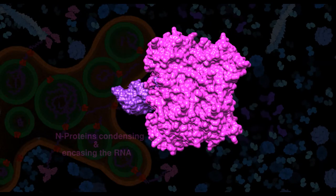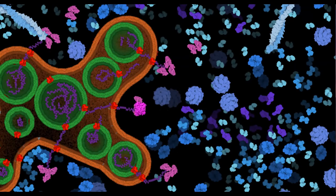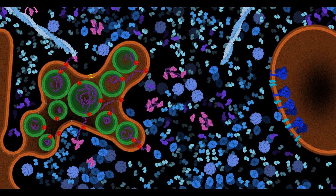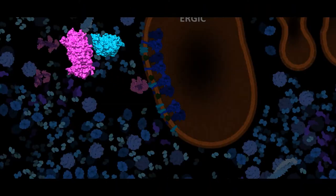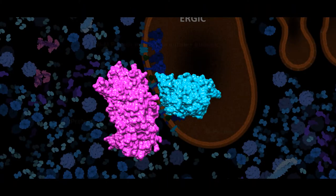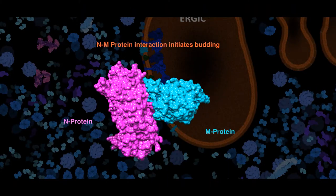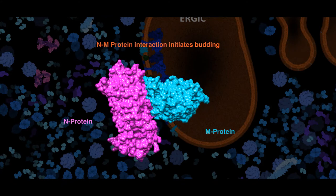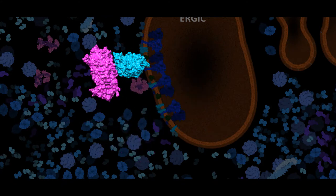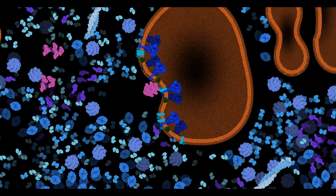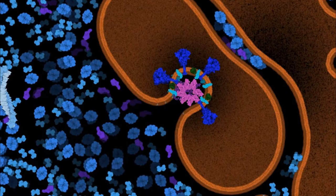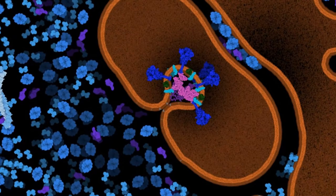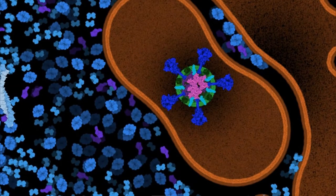which is found within the nucleoplasm. The N proteins and coiled RNA get condensed before the whole complex wanders to join the other three structural proteins at the budding site, the ERGIC. The inward budding of the virus will be induced by the protein interaction between the M and N proteins. To ensure accurate curvature in the formation of a viable viral particle, the M and E proteins interact as soon as the inward budding begins.